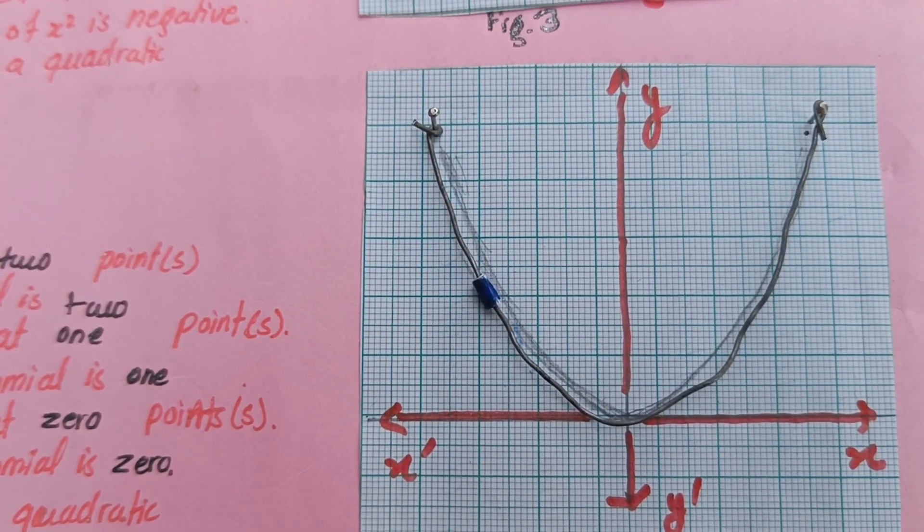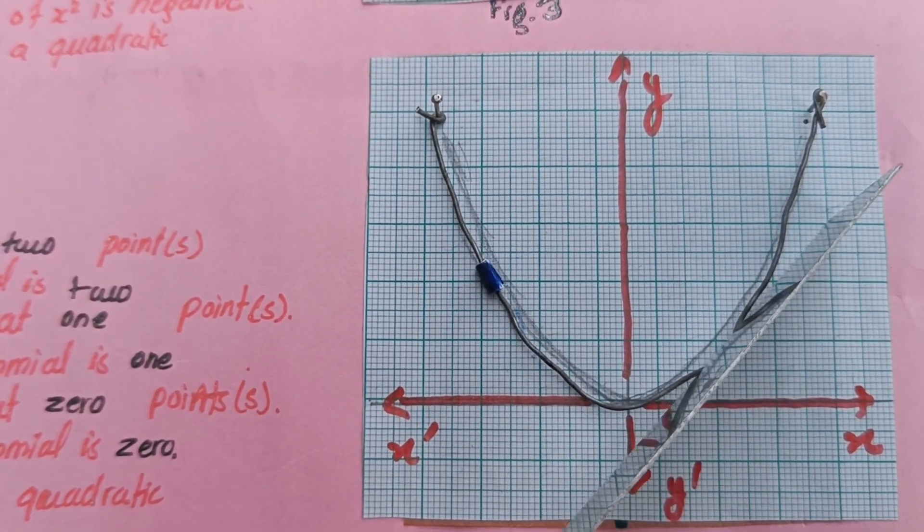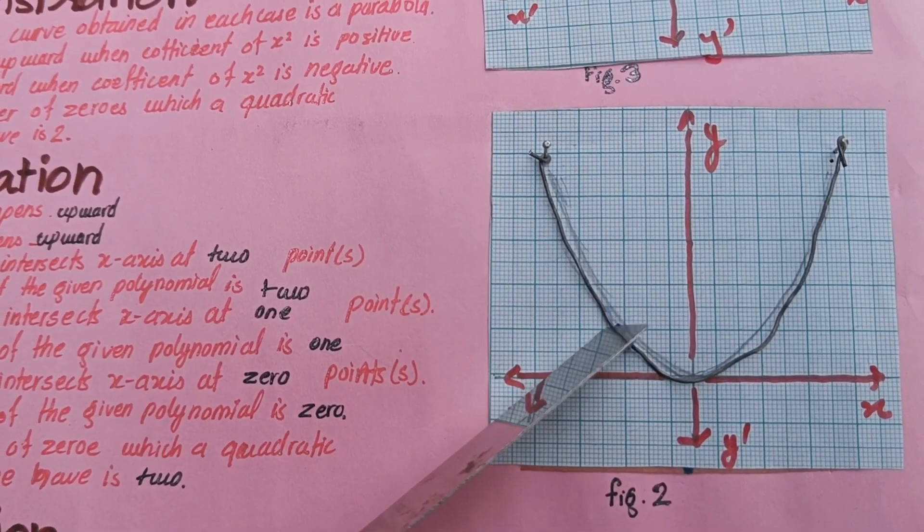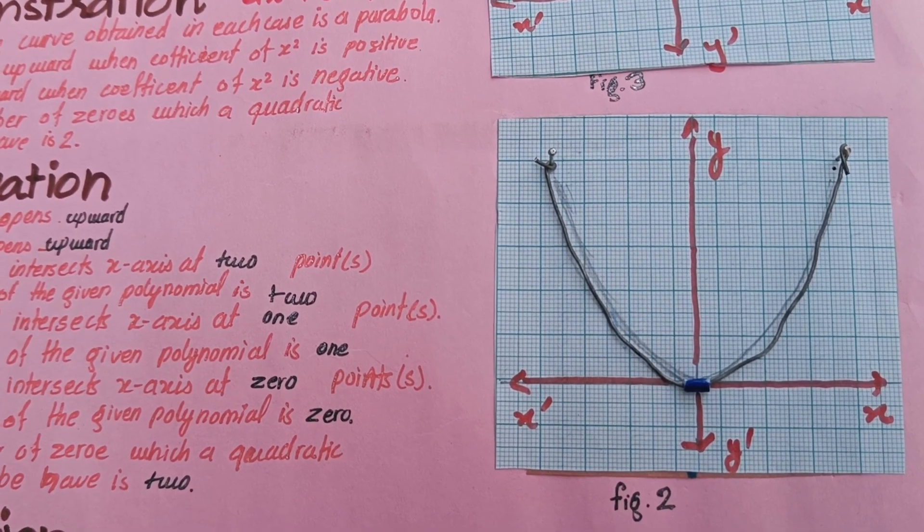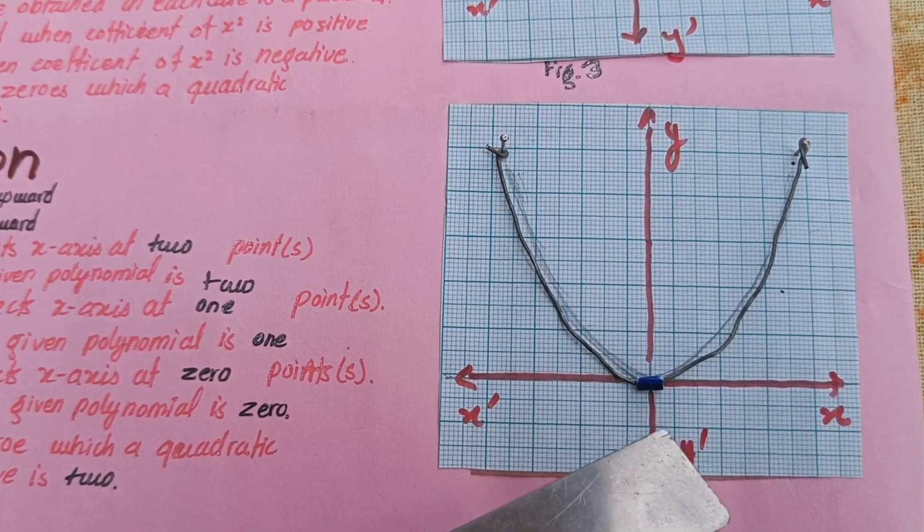In second graph, again a is greater than 0, so graph is in upward direction. And number of zeros is 2 and both are equal. Here y is equal to 0, or ax square plus bx plus c is equal to 0. It touches the x-axis at only one point.